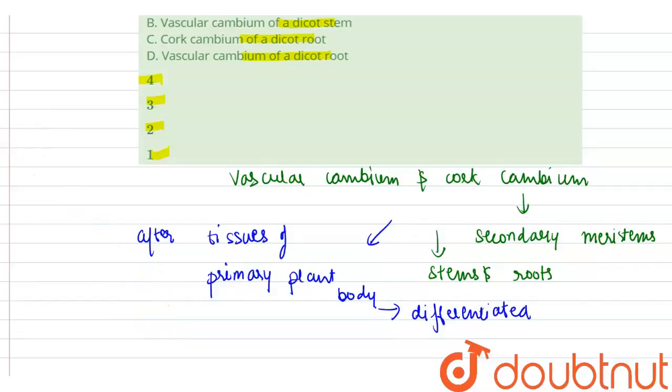So the vascular cambium is responsible for increasing the diameter of stems and roots and for forming woody tissue. The cork cambium produces some of the bark.